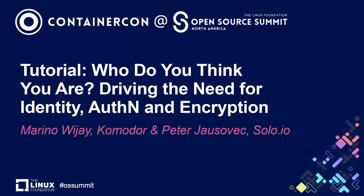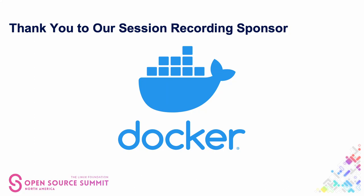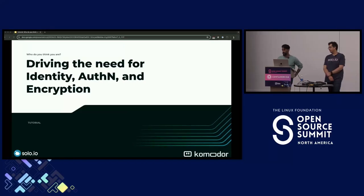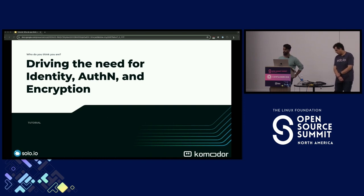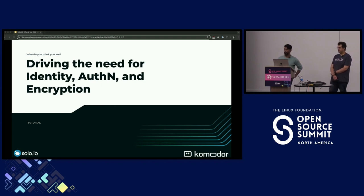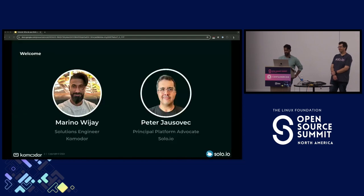Welcome everyone, and thank you for coming to our tutorial on driving the need for identity authentication and encryption. The motivation behind this workshop is to help you understand how identity plays a critical role in how we run workloads, especially in environments like Kubernetes. In Kubernetes, workloads can come online, get on the network, and have identity attached to them so we can verify where services are going and who they're talking to.